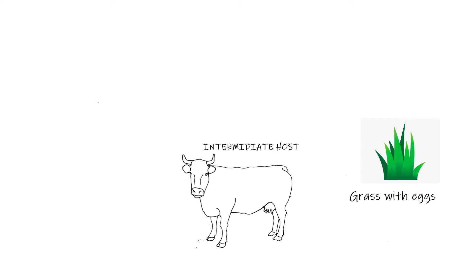It begins with grass containing eggs of the tapeworm. The intermediate host eats the grass and gets infected with eggs. The intermediate host can be a cow or a pig — I just have a cow here.